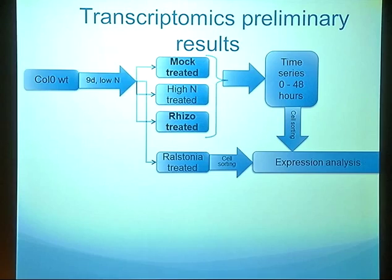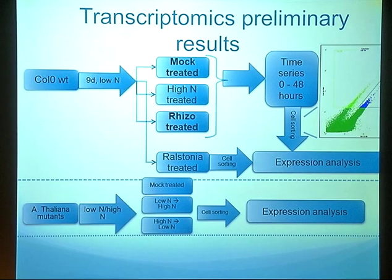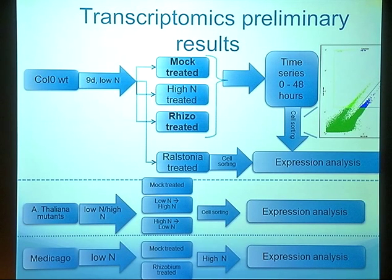Back to the time series: we grow plants for nine days on low nitrogen, then apply different treatments — mock treatment, transplanting to high nitrogen soils, and transplanting to soil with rhizobium. We incubate for 48 hours, take samples at different time points, sort the cells, and do expression analysis. We will do something similar with Ralstonia, though we have not started on that yet. In parallel, others in the lab are doing similar work with Arabidopsis thaliana mutants selected based on their phenotype on different nitrogen soils, as well as expression analysis for Medicago treated and untreated with rhizobium.